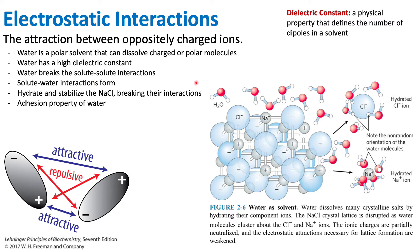The water comes in between the sodium and chloride, disrupting their interaction. The water then forms a solute-water interaction. We see the NaCl split — we have Cl⁻ and Na⁺ — the sodium chloride has dissociated into its ions.